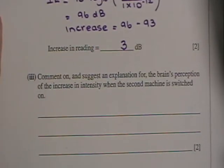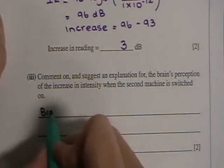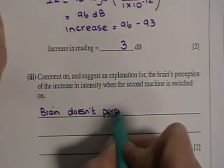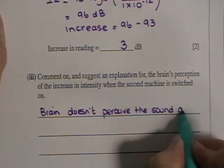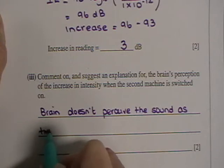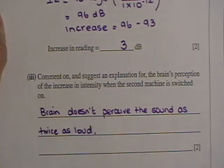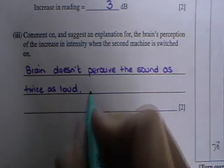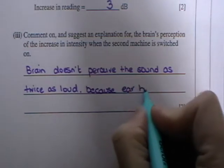Comment on and suggest an explanation for the brain's perception of the increase in intensity when the second machine is switched on. So the brain doesn't perceive the sound as twice as loud. And this is because the ear has a logarithmic response.